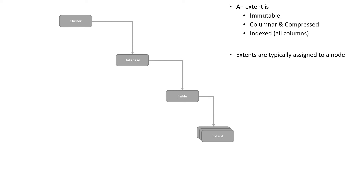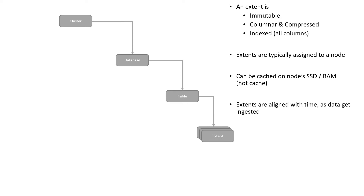Extents are typically assigned to nodes, their content can be cached, and finally, extents are aligned with time as data gets ingested.